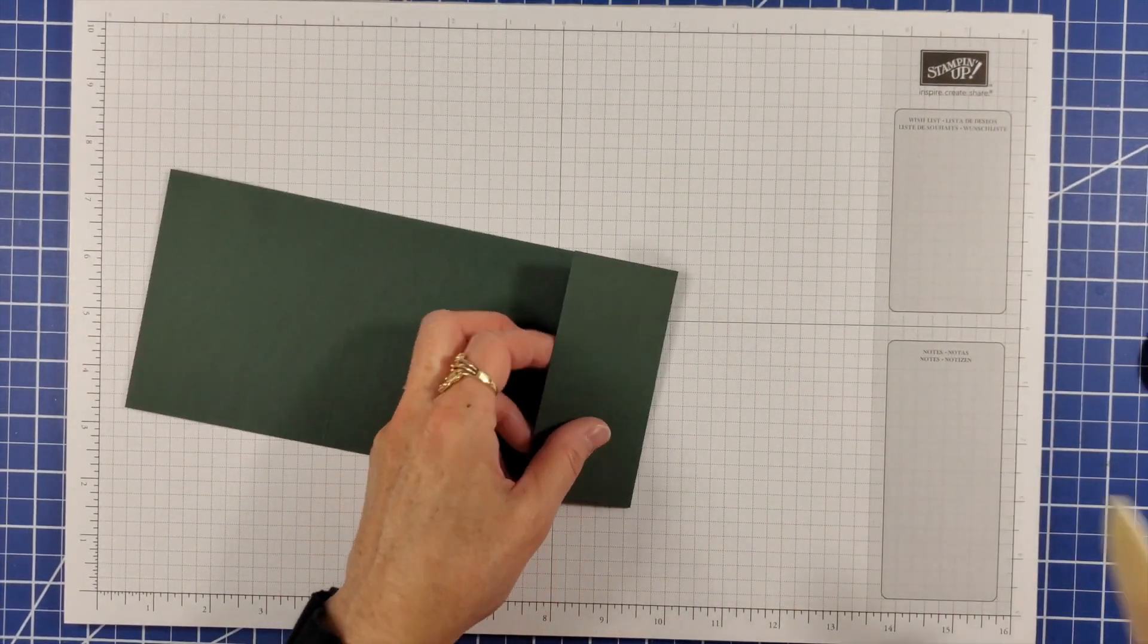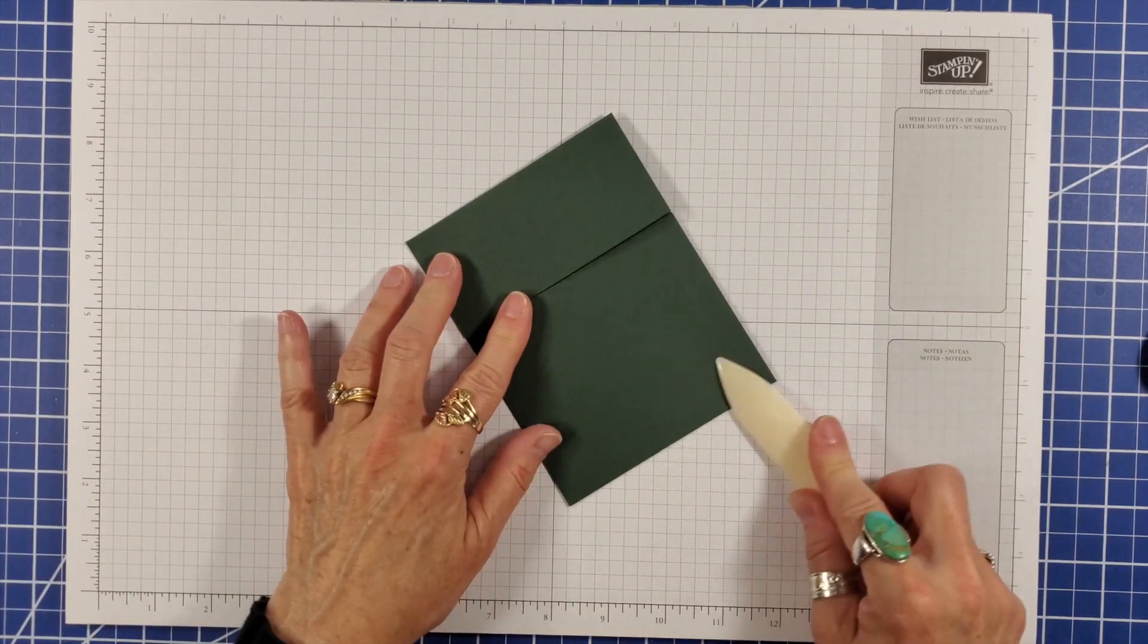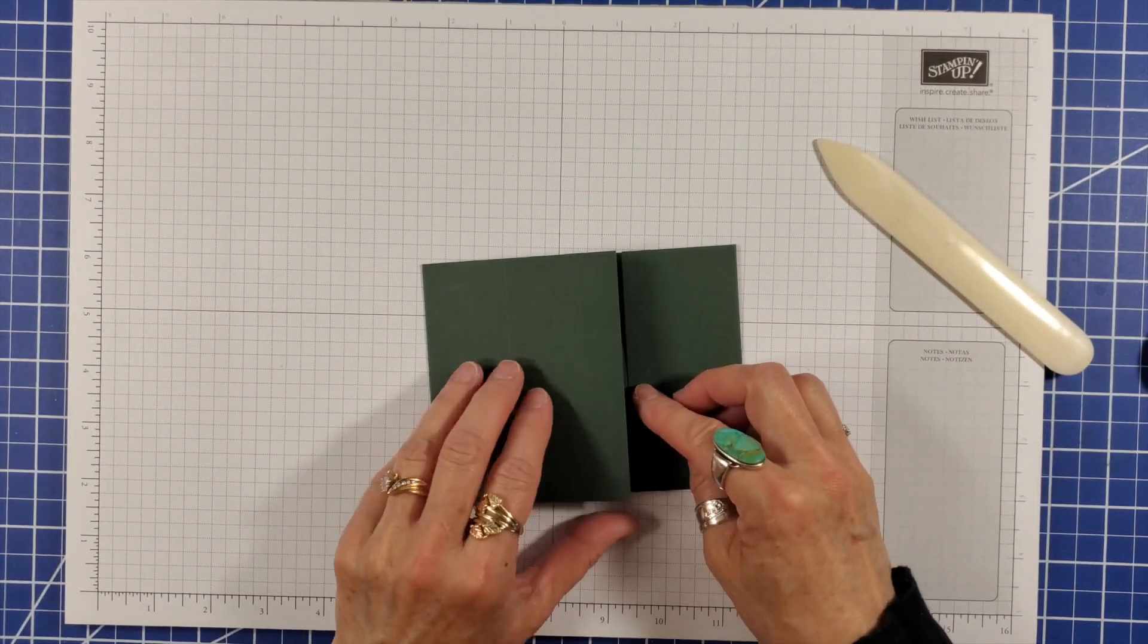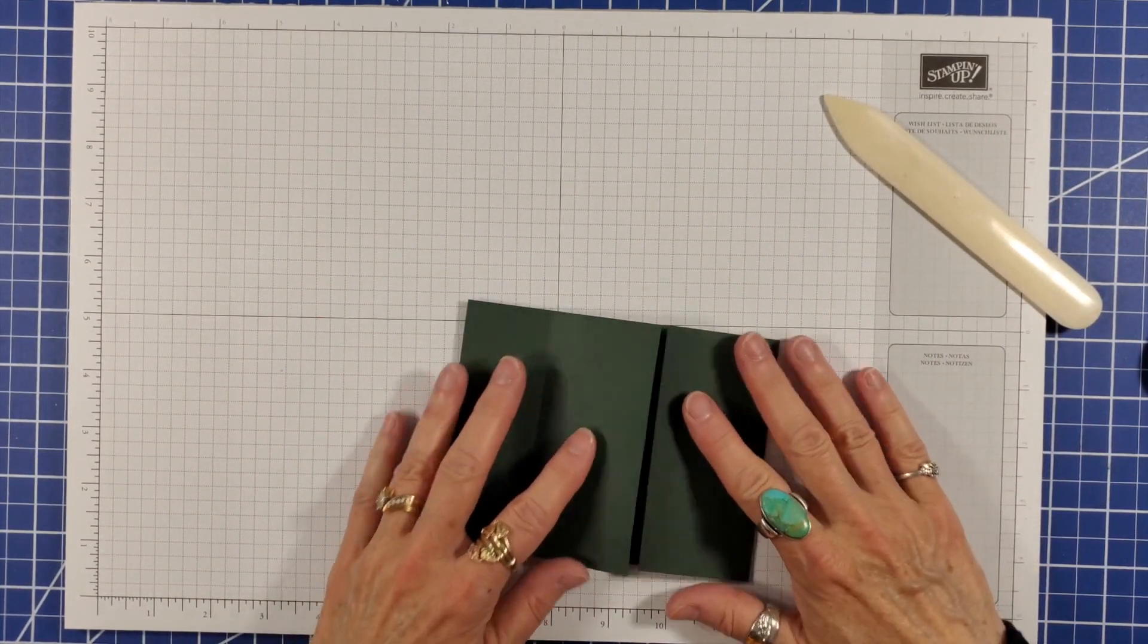Fold the right end in as a mountain fold, fold the left side as the mountain fold, then valley fold or fold back that center panel.